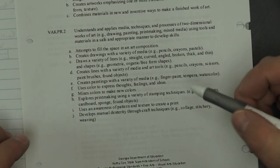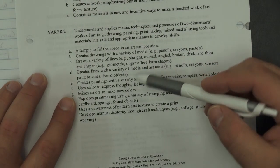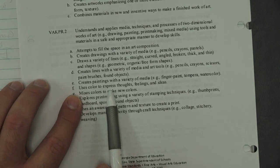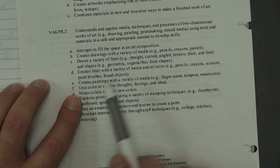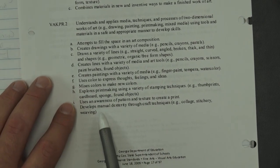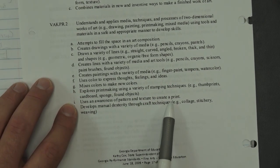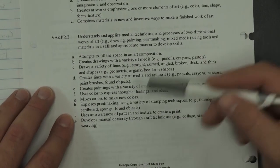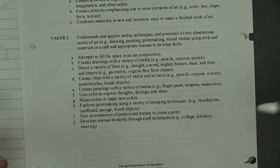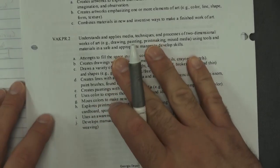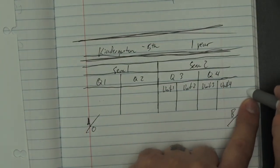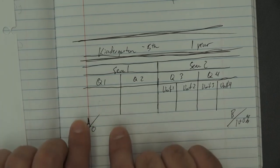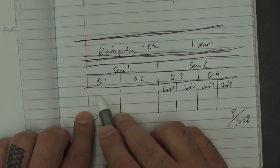That's an important quality: that they know how to use colors to express emotions, thoughts, feelings, and ideas. Usage of line, creates paintings with a variety of media, use awareness of pattern and texture to create a print. All of these elements can easily be done over the course of a couple weeks, and then you're really refining what you're teaching in the subsequent units.